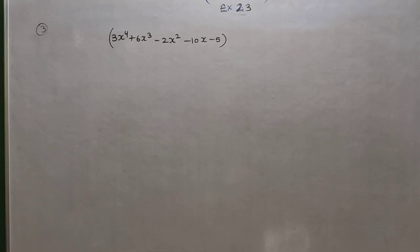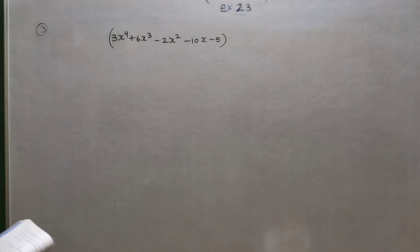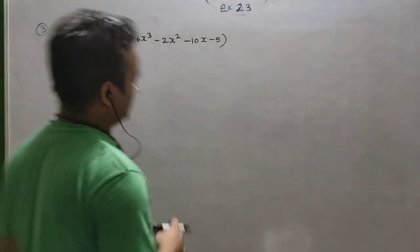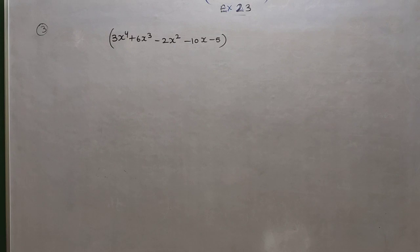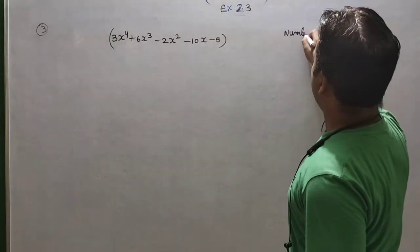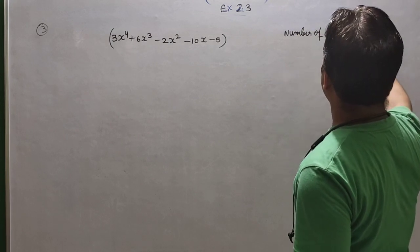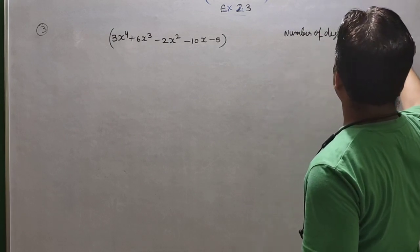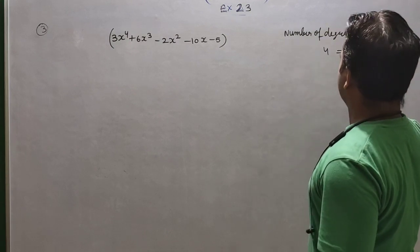Hello students, this is question number three of exercise 2.3. In the previous video we discussed the first and second. Here it's a bi-quadratic polynomial and you know the degree is four. We know that the number of degree is equal to number of solutions, so you can see that the number of degrees gives four solutions.